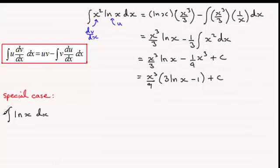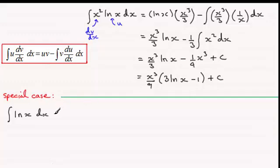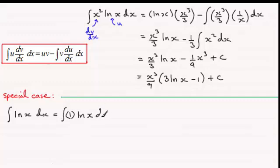Now I've got this special case here, the natural log of x. It doesn't look like it ought to be integration by parts. But what we do is we say that this is exactly the same as the integral of 1 times the natural log of x. So it's 1 times the natural log of x, and we're integrating with respect to x.